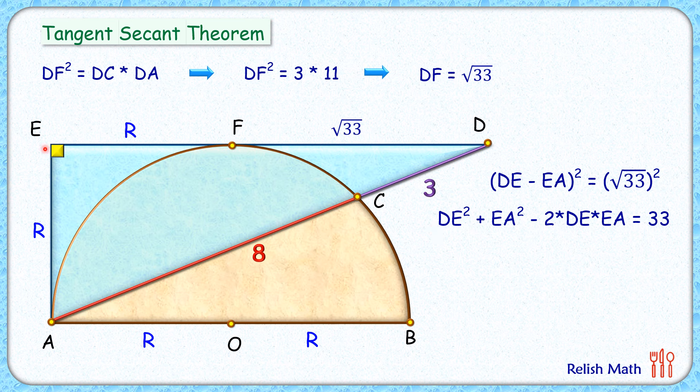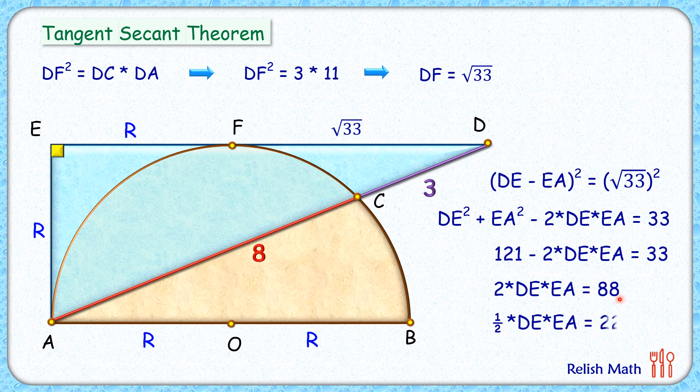Now putting DE square plus EA square, in this blue triangle applying Pythagoras theorem we will get base square plus height square as hypotenuse square. So DE square plus EA square is nothing but 121. Simplifying it, we will get 2 times DE times EA is 88. Dividing both sides by 4, we will get half of DE times EA as 22, and half of DE times EA is the area of this blue triangle.